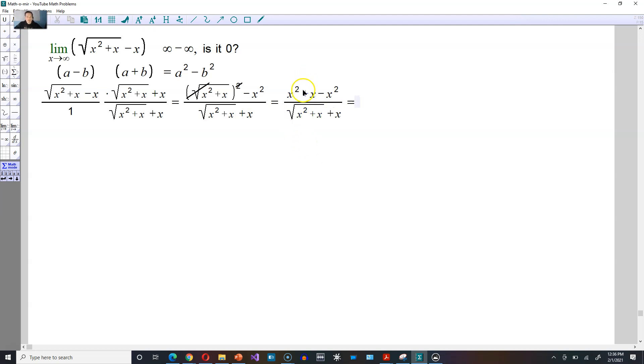Now here in the top you can tell that this positive x squared will cancel off with this negative x squared right here. Which means at the end here we're going to have x divided by the square root of x squared plus x plus x.